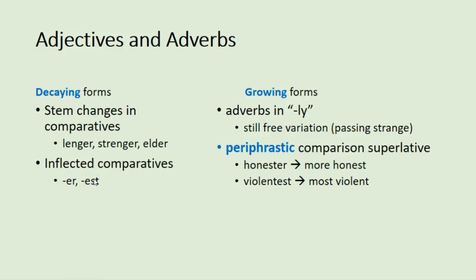What we get is a growth in what's called the periphrastic comparison and superlative. A word like honester became more honest, and honester is a word we would see in Shakespeare. Violentist would become most violent. When you form the comparison and superlative by adding more and most, that's the periphrastic. French only has this, so it may have been under the influence of French syntax that we get a split in the English adjective and adverb comparative system between the inflected and the periphrastic.